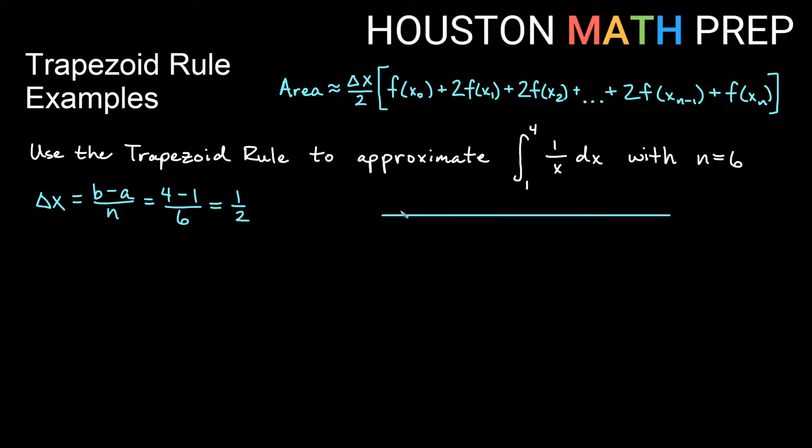So now that tells me right away that each time I plug in a new x value, I will need to move over 1 half. And then I will know what to plug in. So my interval is from 1 to 4. 1 is going to be my x₀. Since I'm using 6 subintervals, I know that this is going to be my x₆. So we start at x₀, end at x₆, and then I will go up by a half each time.